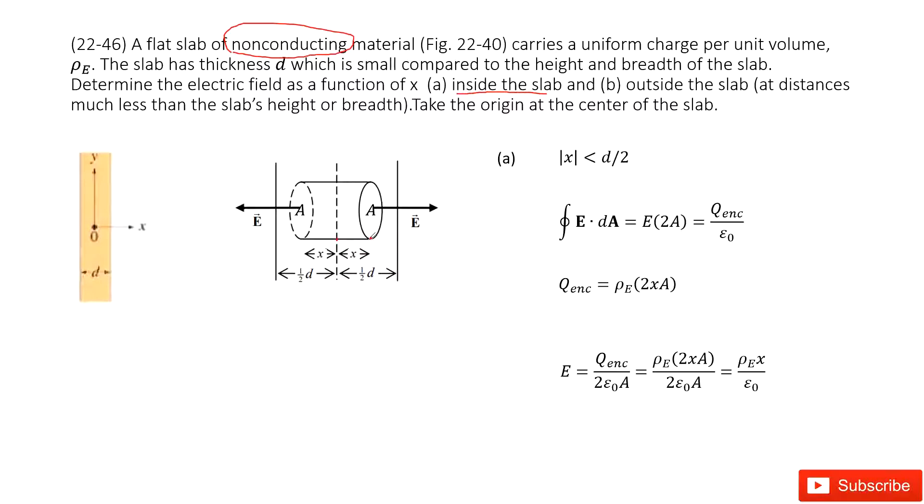And then we can see we use Gauss's rule. We can see electric field times Gaussian surface. Because you can see the electric field is just perpendicular to this object. So this is E, this is E. So this E times Gaussian surface A at this side, A at another side,